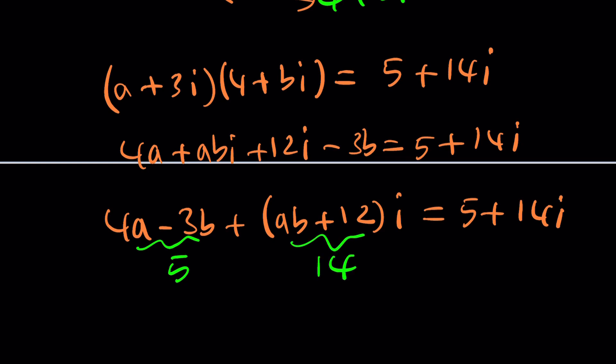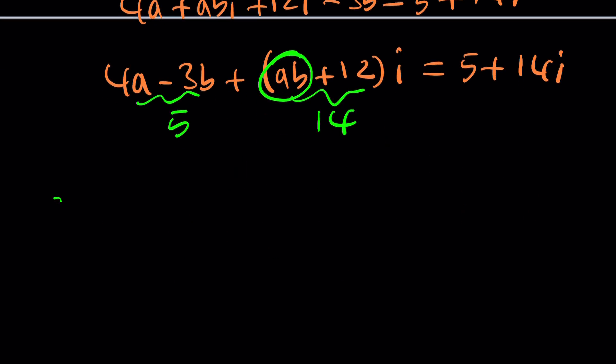This is 5, this is 14, which means ab is equal to 2. Okay, ab is 2, 4a minus 3b is equal to 5. How do you solve it? 2 and 1, we already know it's going to work.